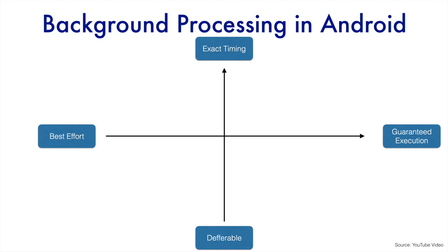Based on these axes, foreground services fall into the first quadrant — they execute at an exact moment in time and are always guaranteed to run. In the second quadrant, thread pool, Kotlin coroutines, and RxJava come into picture. You can control the exact time at which you want to execute, but not in a guaranteed manner — it will try its best.